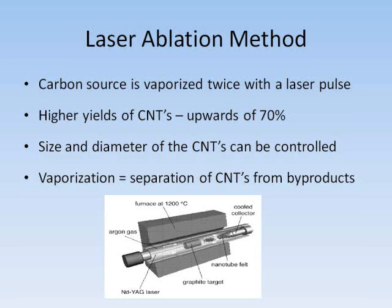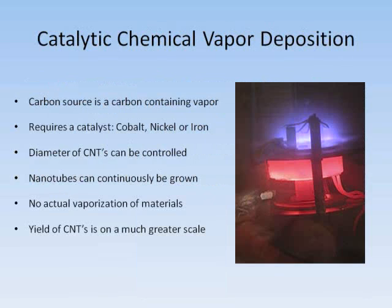Catalytic chemical vapor deposition makes use of carbon atoms from vaporous hydrocarbons, such as ethylene and acetylene, to supply the growth of the nanotubes. A catalyst is also required, such as cobalt, nickel, or iron. The diameter of the nanotubes can be controlled by varying the size of the metal particles acting as catalysts in the reaction chamber. To grow the nanotubes, two gases are slowly emitted: one being the process gas, which is usually nitrogen, hydrogen, or a gas containing the two.